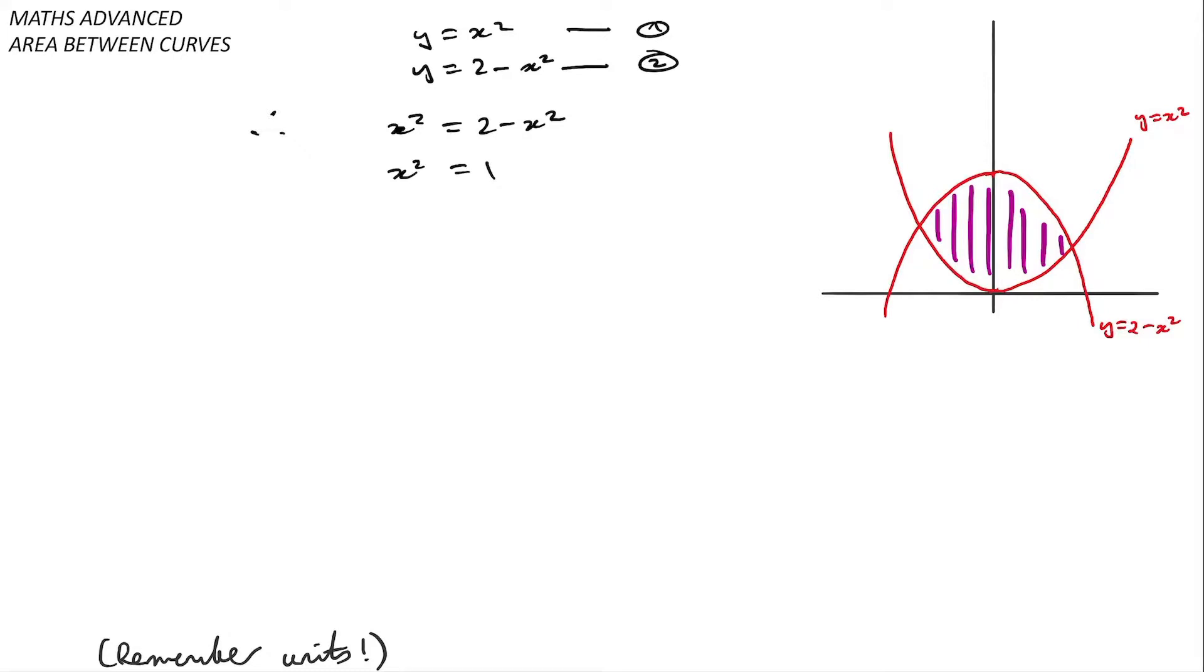In this particular problem I'm considering y equals x squared and y equals 2 minus x squared, and it should be clear enough that here I have a region that's bounded between both of them and only both of them, and what I want to do is basically compute its area.